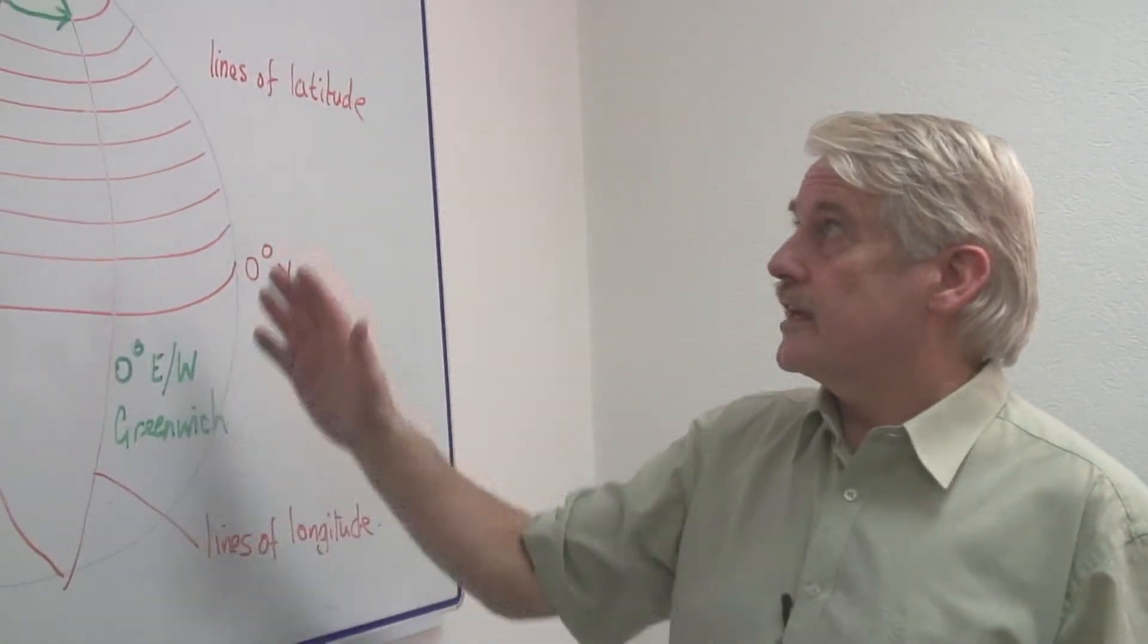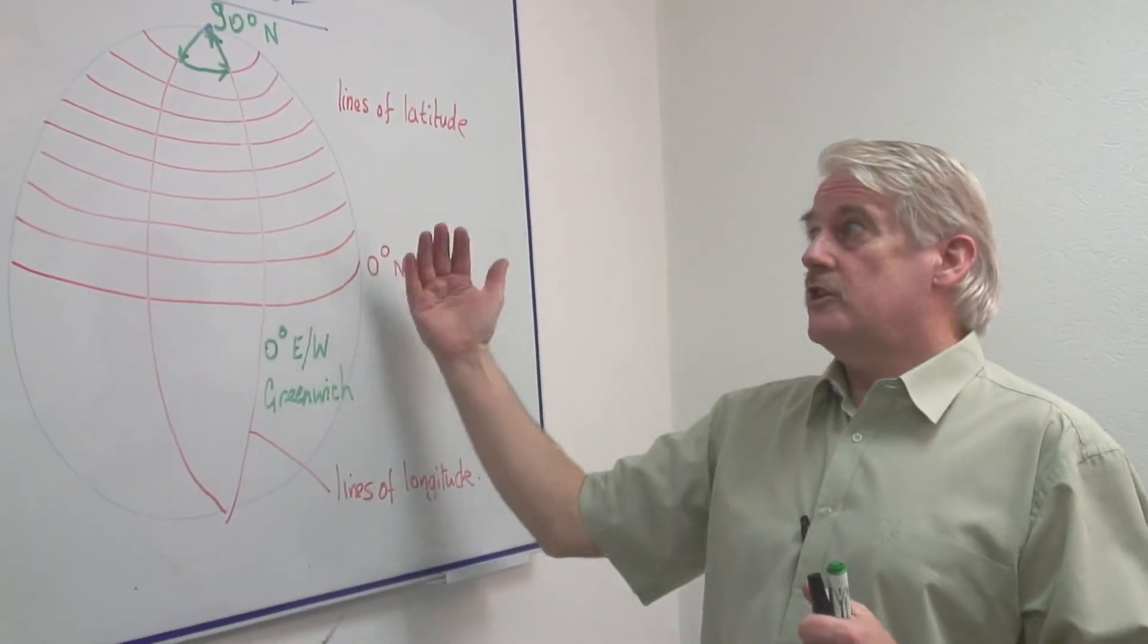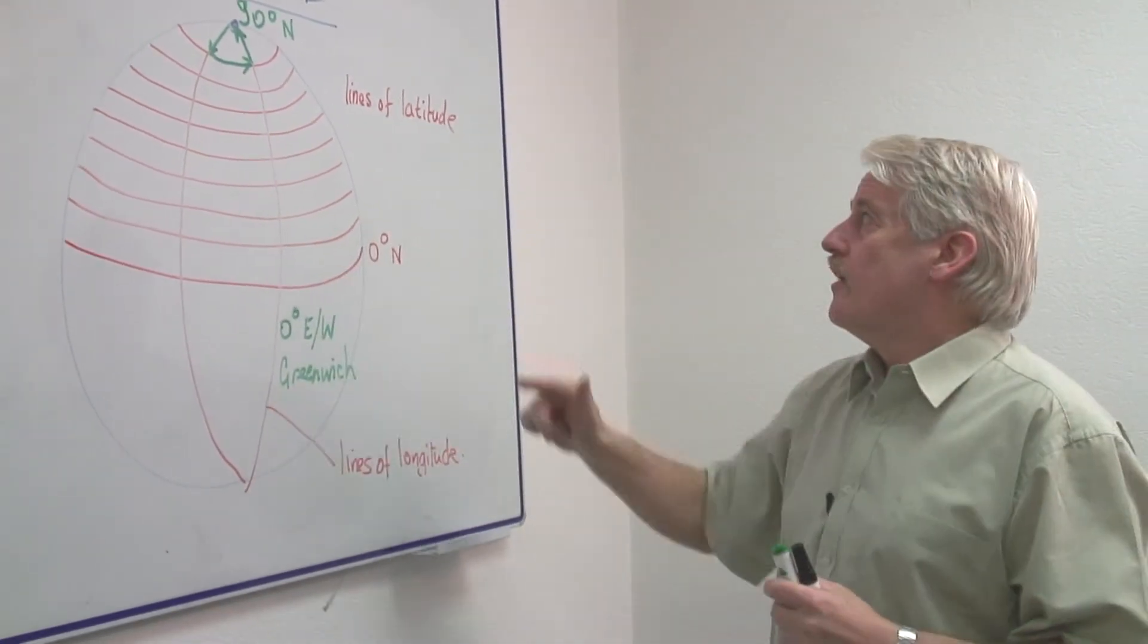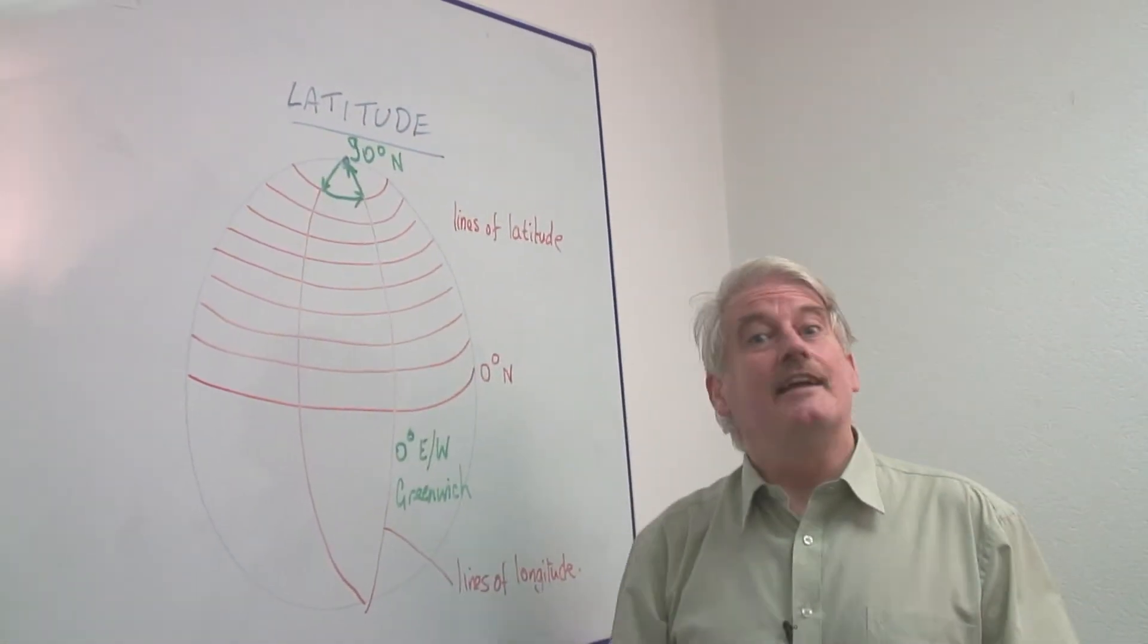So here we have an explanation. The lines of longitude are determined by time. The lines of latitude go from zero and the maximum number is 90.